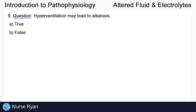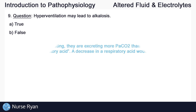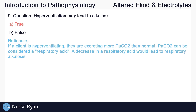Question number nine. Hyperventilation may lead to alkalosis. And this is A, true. If a client is hyperventilating, they are excreting more PaCO2 than normal. PaCO2 can be considered a respiratory acid. A decrease in a respiratory acid would lead to respiratory alkalosis.